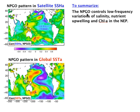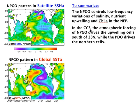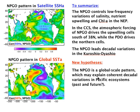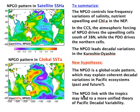To summarize: the NPGO controls low-frequency variations of salinity, nutrient upwelling, and chlorophyll-A in the Northeast Pacific, which had remained unexplained until now. In the California Current system, NPGO atmospheric forcing drives the upwelling cells south of 38°N, while the PDO drives the northern cell. The NPGO also leads decadal variations in the Kuroshio-Oyashio extension, potentially providing predictive skill and a mechanism to link ecosystems across regions. These findings suggest new hypotheses: the NPGO is a global-scale pattern that may help explain coherent decadal variations in Pacific ecosystems, and its link with the tropics may lead to a more unified theory of Pacific decadal variability.